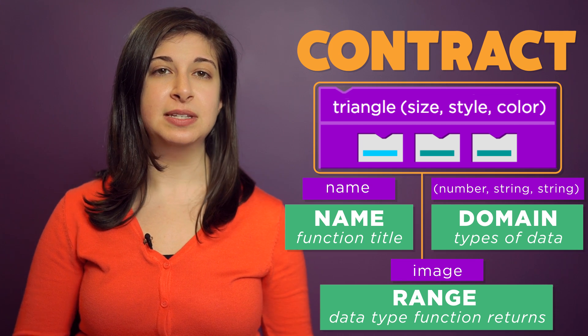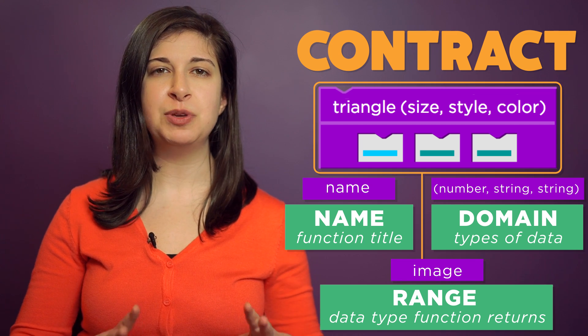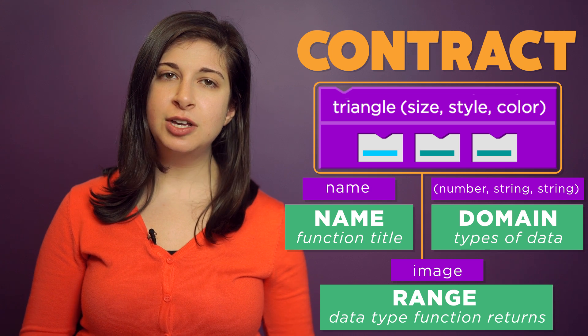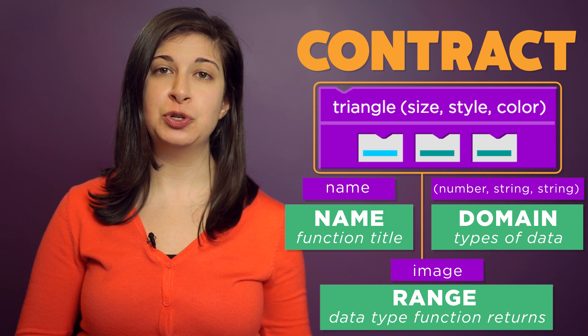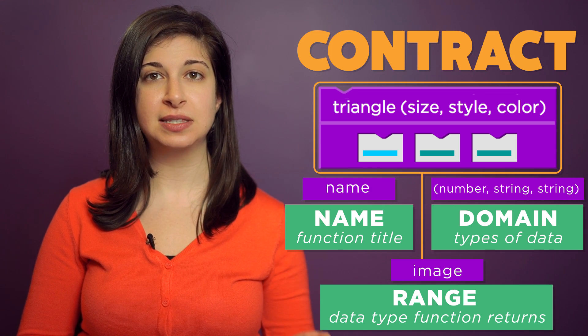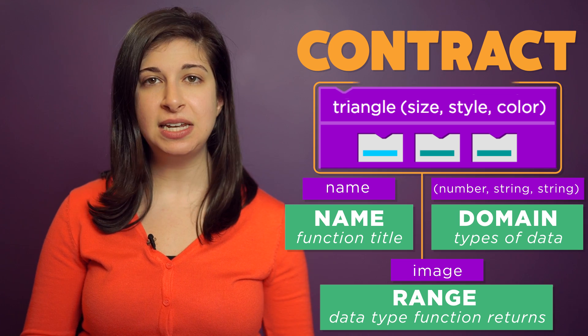We use types instead of values when we write a contract because we want to be more general. A star could be any size, so the domain for the star specifies that the first input could be any number value.